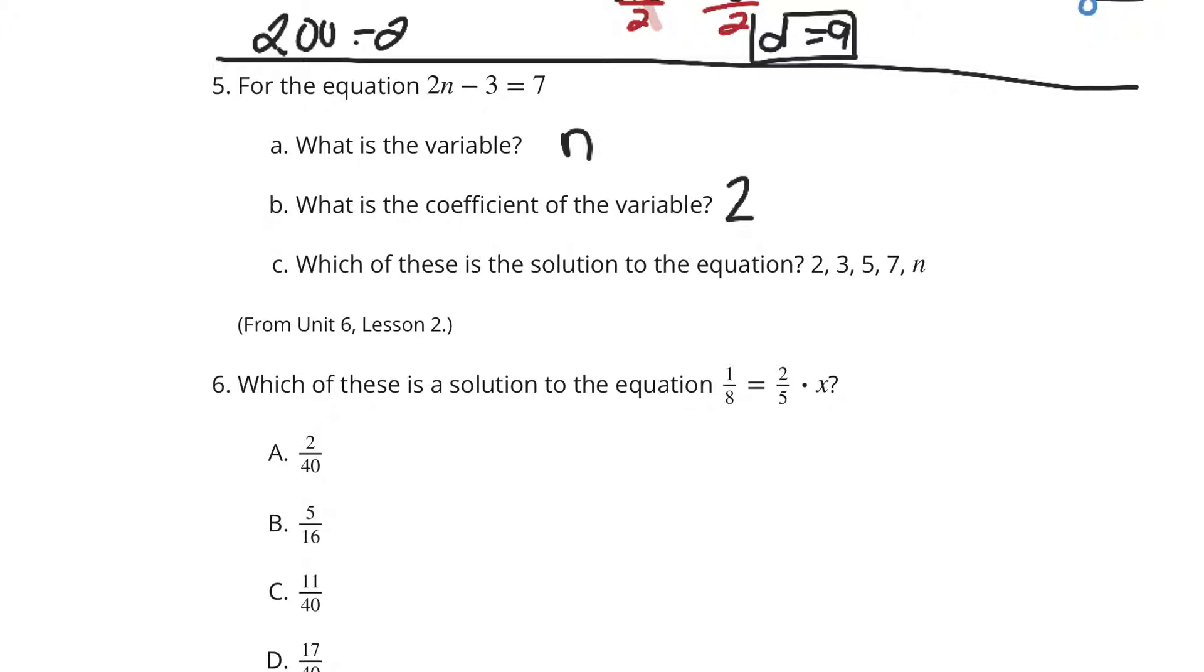So if we have 2 times something minus 3 equaling 7. You put in the 2. 2 times 2 is 4. Minus 3 is 1. So that's not 7. You put in the 3. 2 times 3 is 6. Minus 3 is 3. So that's not 7. You put in the 5. 2 times 5 is 10. Minus 3 is 7. So 5 is a solution. If you were to put in 7, 2 times 7 is 14. Minus 3 is 11. That's not going to work. You put in N and that's not going to work either.